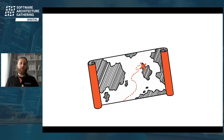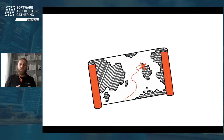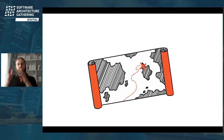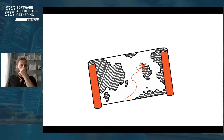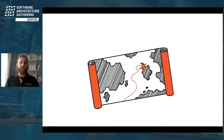What we need to do instead is have documentation close to the developers, created by developers — and by developers I mean the Scrum way, everybody involved in creating value for the customer. In a regulated environment, technical writers may be the right approach, but software developers should be able to document their own important stuff — i.e., software architecture.